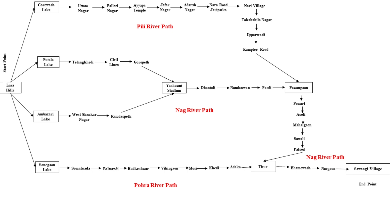From Yashvant Stadium, Nag River flows through Dhantoli, Nandamvand, Pardhi, Pavangaon, Povari, Asali, Mahalgaon, Savali, Palsod, Titur, Bhamewada, Navgaon, and meets Kanhan River at Sawangi, Bhandara.